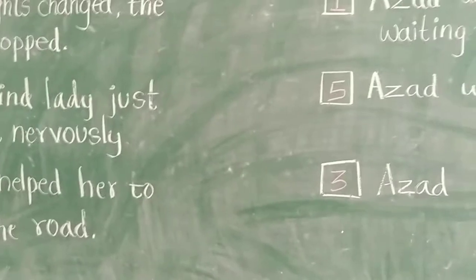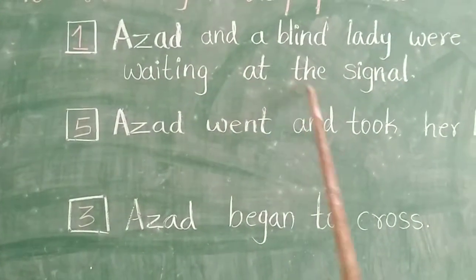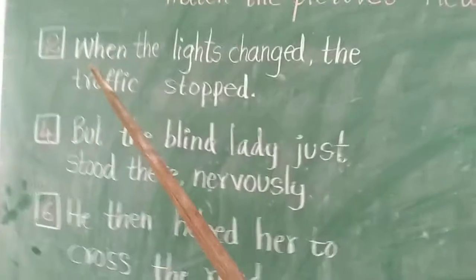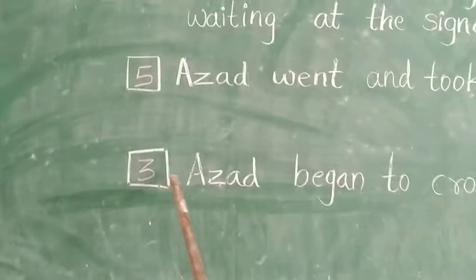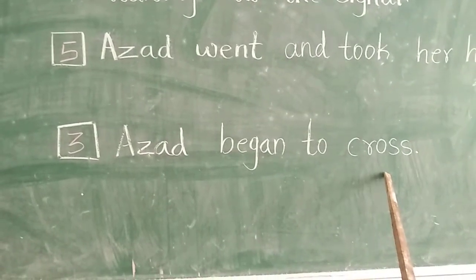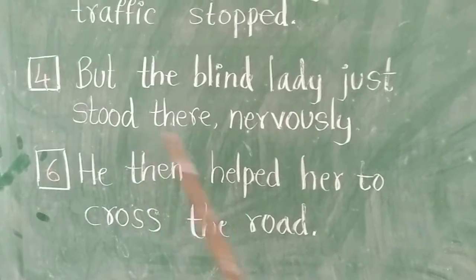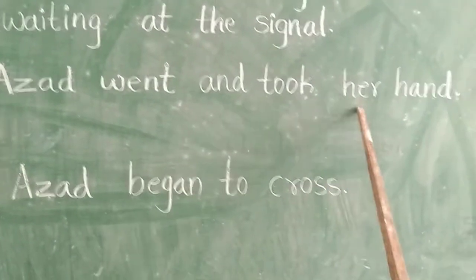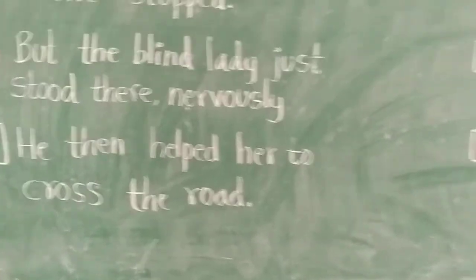Let us read this story in proper order. First sentence: Azat and a blind lady were waiting at the signal. Second: When the lights changed, the traffic stopped. Third: Azat began to cross. Fourth: But the blind lady just stood there nervously. Fifth: Azat went and took her hand. And the last sentence: He then helped her to cross the road. This is the story of Azat and the blind lady.